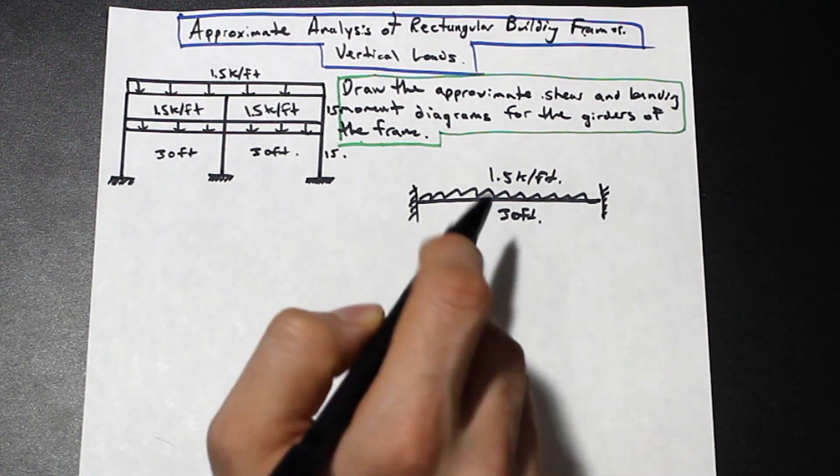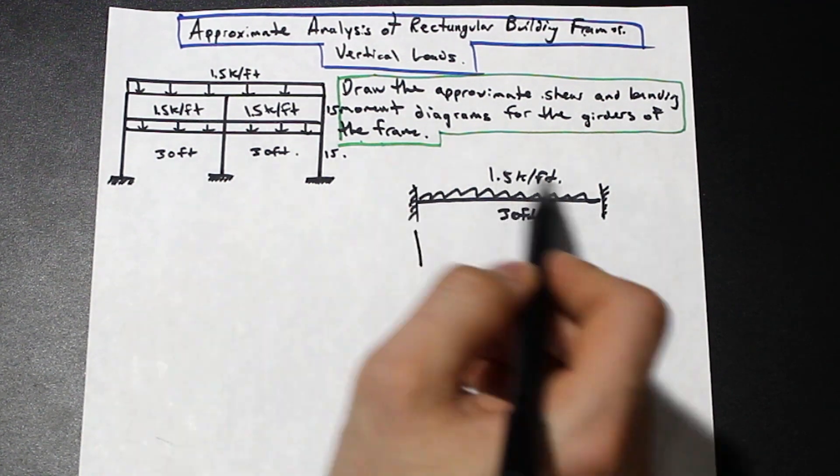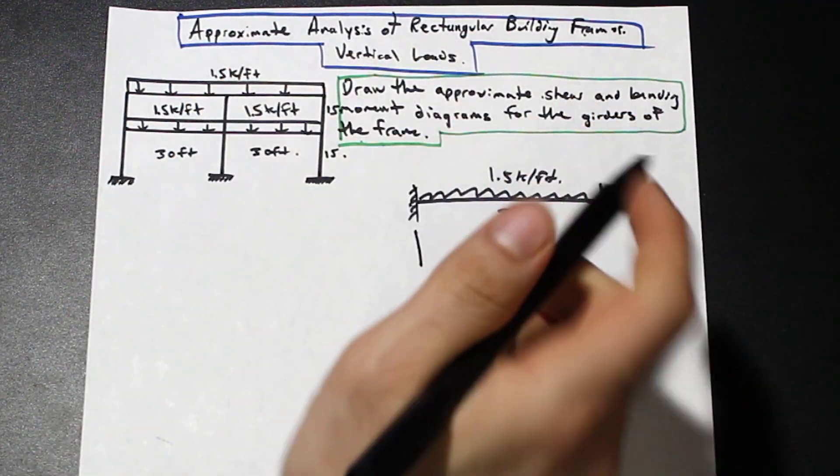So we can either do it by computer software or you can do it using the approximate analysis method. Good question for exam, by the way. So what this is going to involve is we're going to, and just so this is a girder, we just took one of the girders and we're going to analyze it out here.